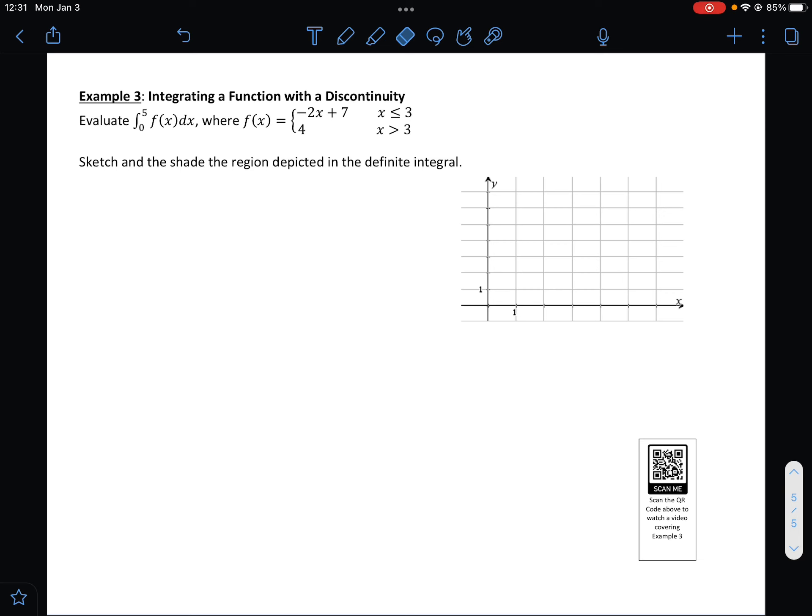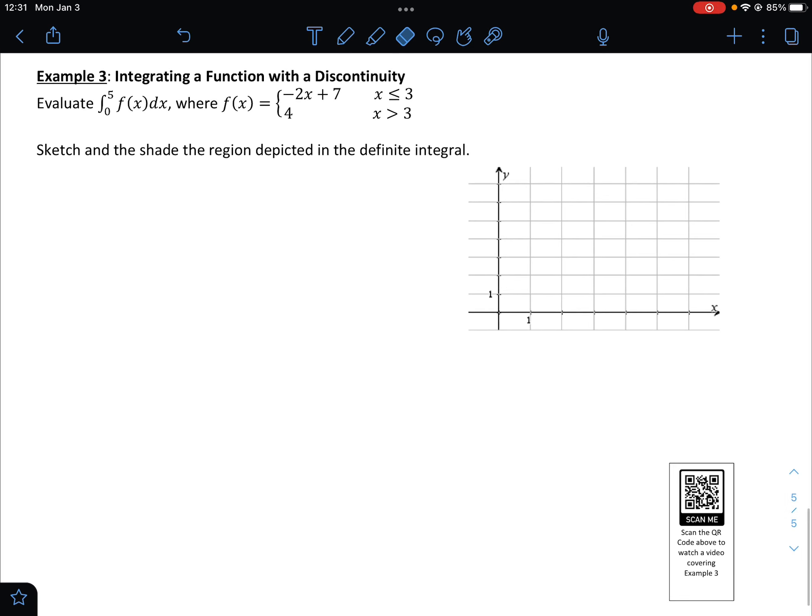Last one, example 3, integrating a function with a discontinuity. Sketch and shade the region depicted in a definite integral. All right, so from positive 3 to the left, we're graphing the line negative 2x plus 7. So if we graph that, that would be a y-intercept of 7 and a slope of negative 2, all the way until we get to 3. And then to the right of 3 we're graphing the line y equals 4.